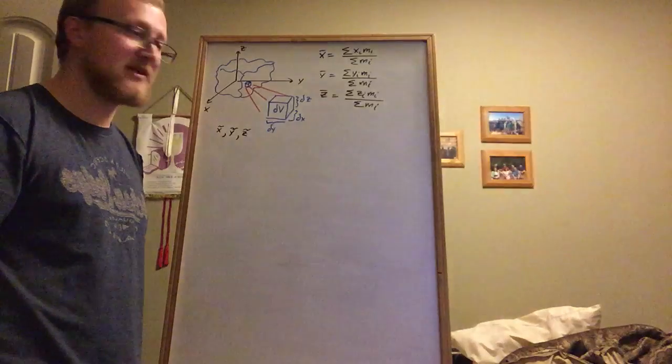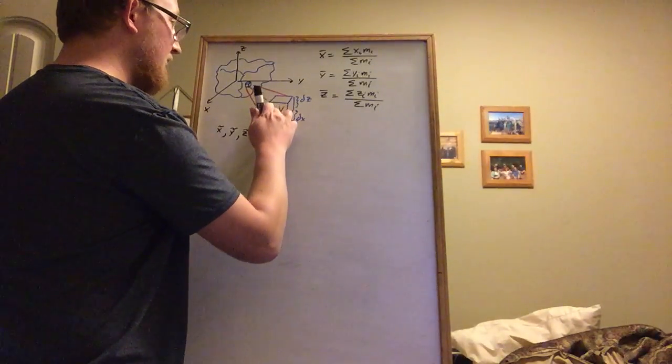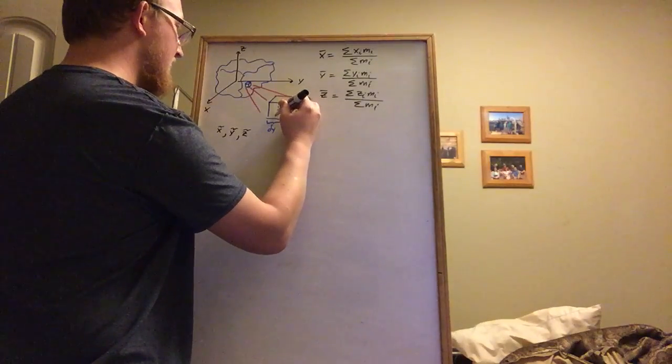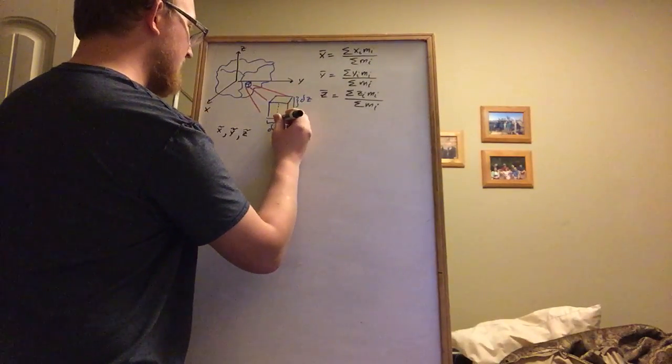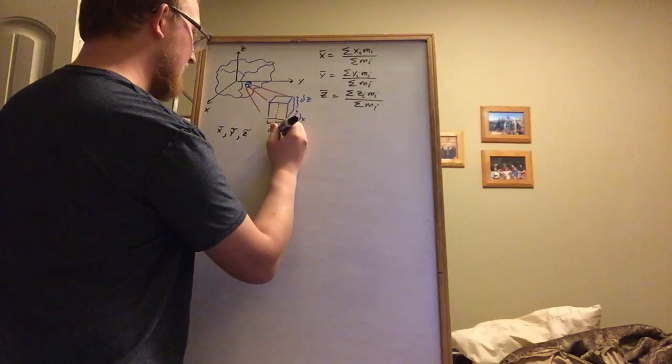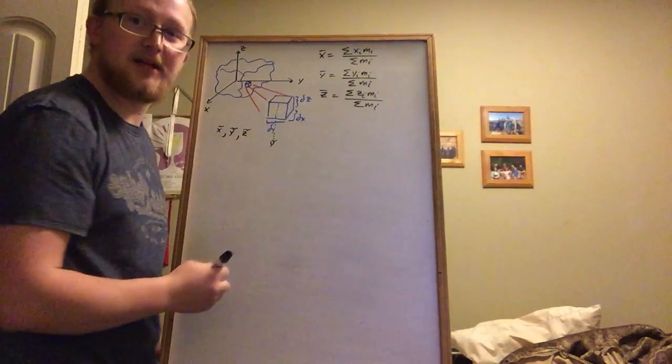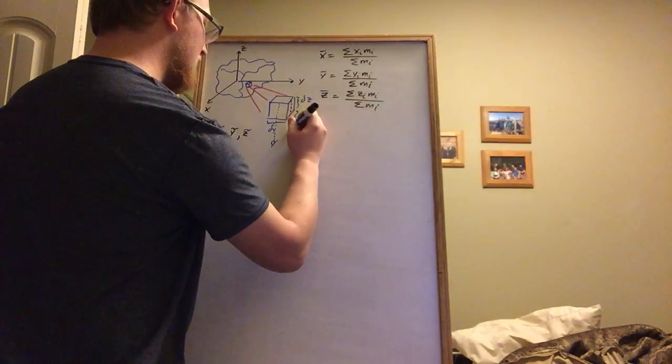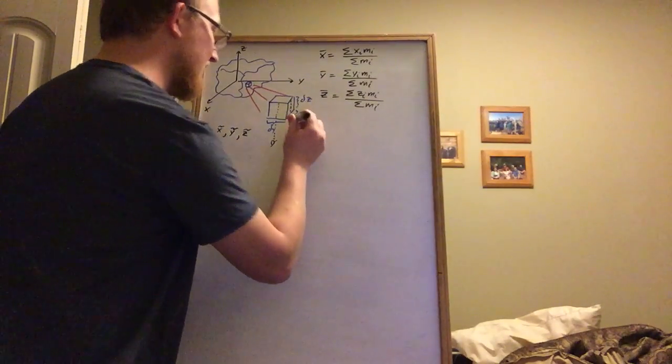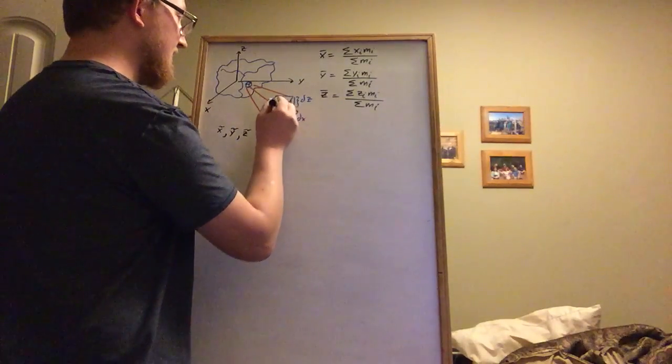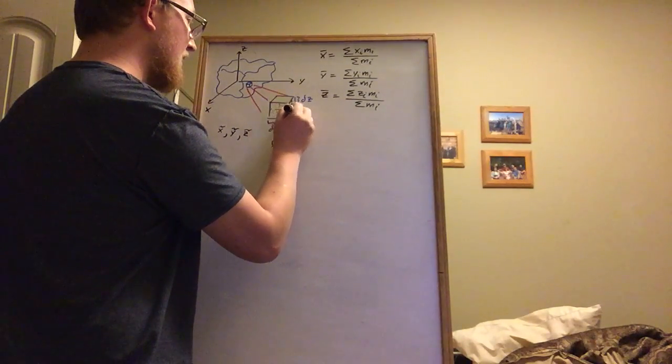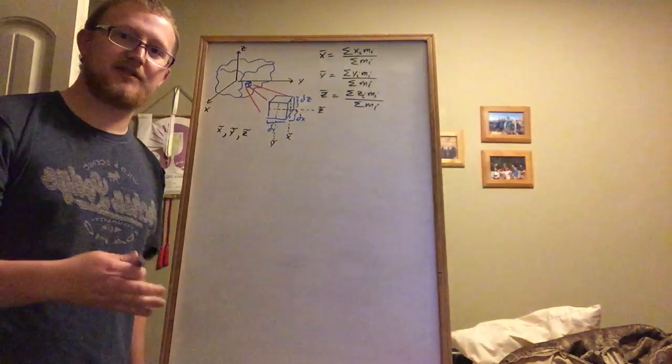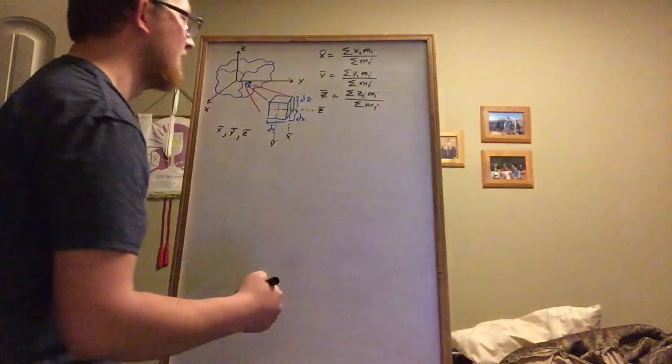Once we know the center of this chunk, then we can sum across the volume and figure out where the center of the larger amorphous shape is. So let's, now that we know that's dV, let's make our guess. I'm going to go ahead and guess that y tilde is right down the middle. I'm also going to make the guess that x tilde is right down the middle of the x side, and that z tilde is also going to be right down the middle.